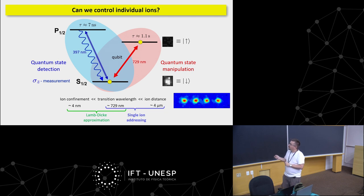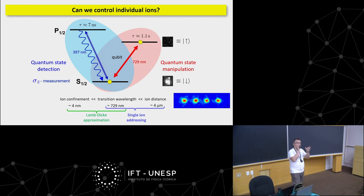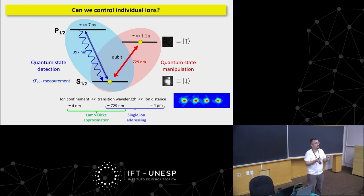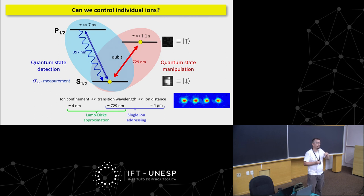For the physics part, remember the ion confinement: the size of the wave packet is on the order of 5 to 10 nanometers — really, really small compared to the wavelength. If you think about your Hamiltonian, this e^(ikx): k is the wavevector, x is the size of the wave packet, so that number is really small, 10^(-2) to 10^(-3). That's why you can make this Taylor expansion and really only interact with, say, a carrier without changing the vibration of the ion, or adding/removing one phonon, but not something super complex. That makes the math easy.